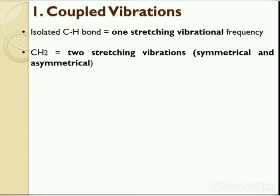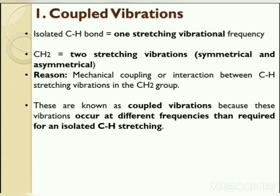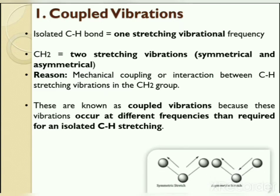An isolated C-H bond has only one stretching vibrational frequency, whereas a methylene group shows two stretching vibrations: symmetrical and asymmetrical. This happens because of mechanical coupling or interaction between C-H stretching vibrations in the CH₂ group. Asymmetric vibrations occur at higher frequencies or wavenumbers than symmetric stretching vibrations. These are known as coupled vibrations because they occur at different frequencies than required for an isolated C-H stretching.